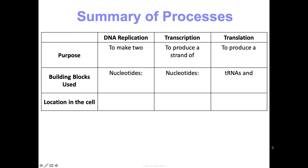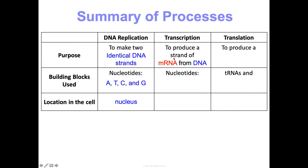To summarize the three processes: DNA replication makes two identical DNA strands so dividing cells have all their DNA, using nucleotides A, T, C, and G, and happens in the nucleus. Transcription produces a strand of mRNA from DNA that can leave the nucleus and go to the ribosome, using nucleotides A, U, C, and G, and also happens in the nucleus. Translation produces a polypeptide that folds into a protein from the mRNA, using tRNAs carrying amino acids, and happens in ribosomes.